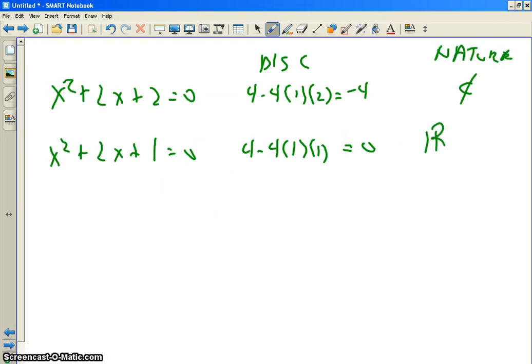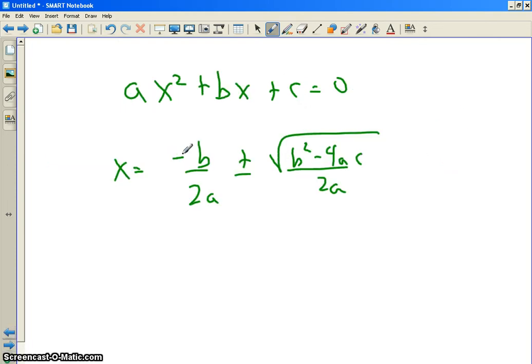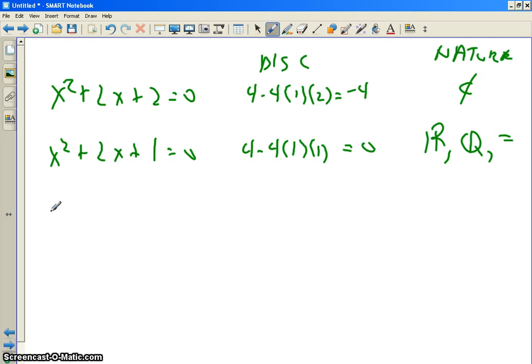Real, we call that real, rational, equal roots. Because they're rational. An integer divided by an integer. Let's say a, b, and c are integers.